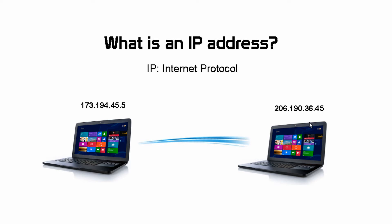When one computer wants to connect with another, it needs to know its IP address so it can actually connect to that computer and get the information or files that it wants. It's like when you want to telephone someone — you need that person's phone number so you can call them. It's pretty much the same thing with computers. If one computer wants to connect to another to get information, instead of a phone number, it needs an IP address. That's exactly why IP addresses exist.